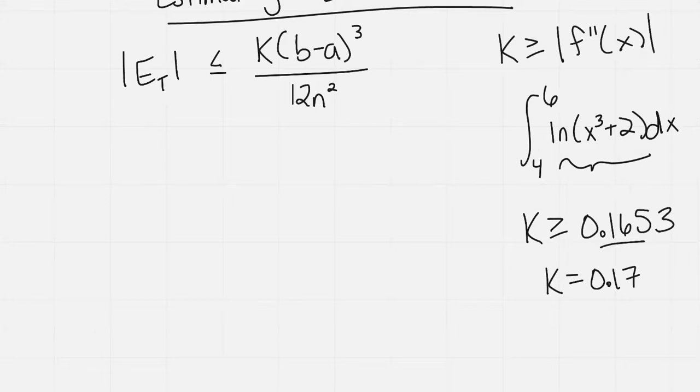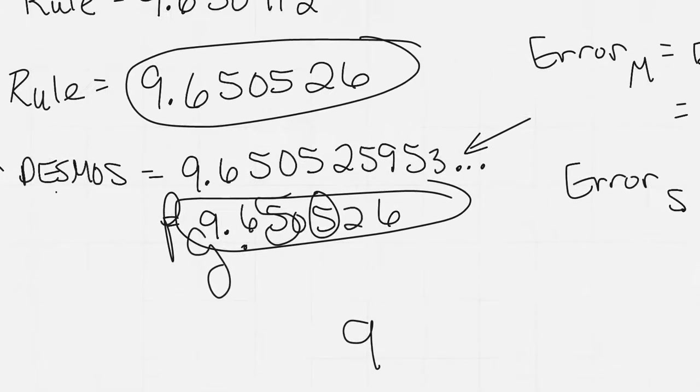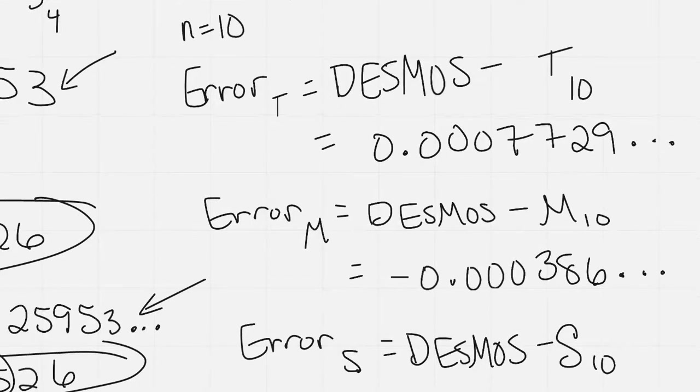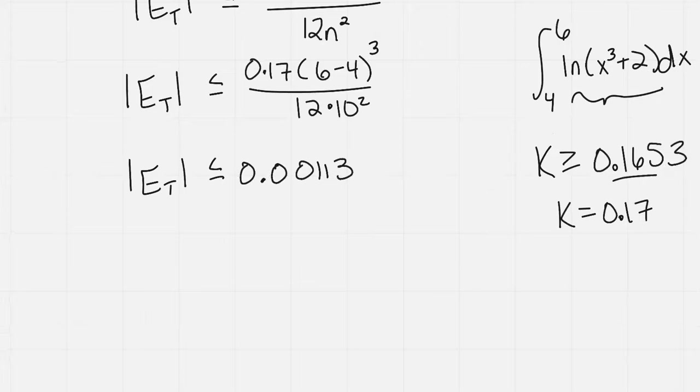And I'm going to put that into my formula. So the absolute value of my trapezoidal error would be 0.17 times 6 minus 4, that quantity, because it'd be b minus a, all of that cubed, all over 12 times 10 squared because our n was equal to 10. And then when I calculate this, I get the absolute value of my error for trapezoid has to be less than or equal to 0.00113. So within this 0.00113. And I went back and I grabbed earlier my error that I calculated on the trapezoidal from the calculator answer I'd got, and I got 0.0077. So I want to bring that in to look at it. So what I've done now is I've already calculated the error bound. Done. So that part's done.